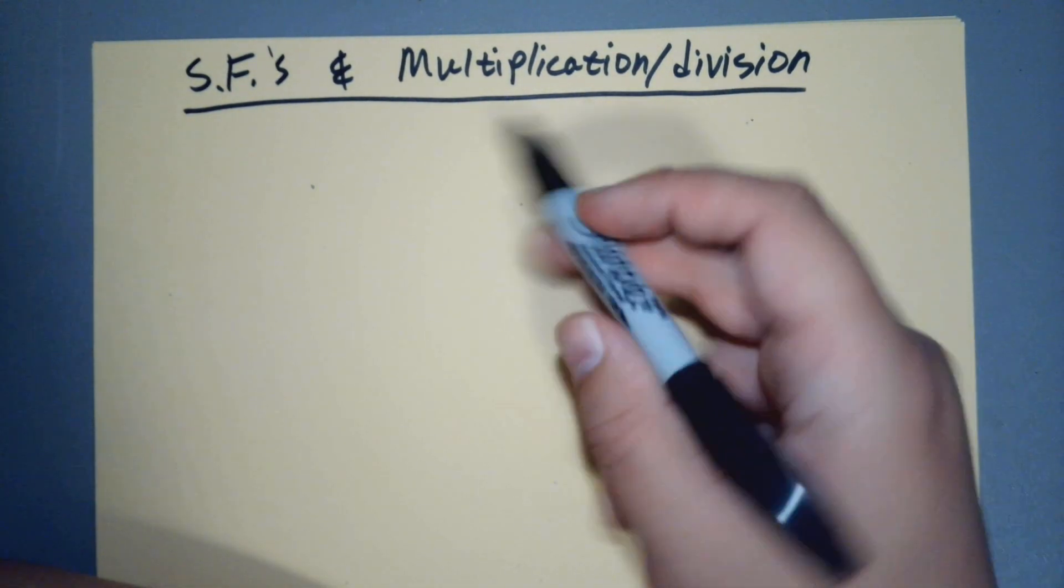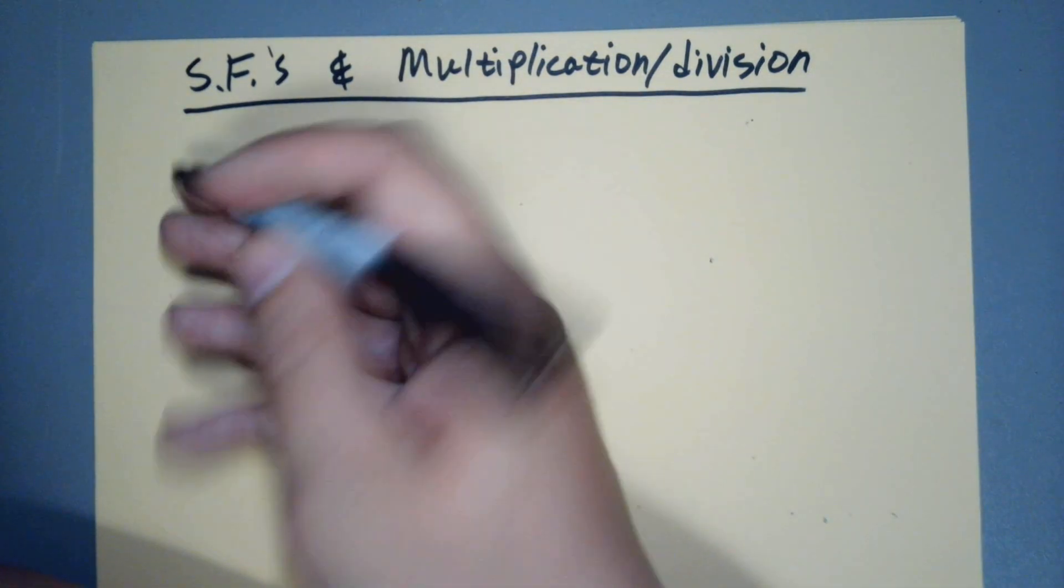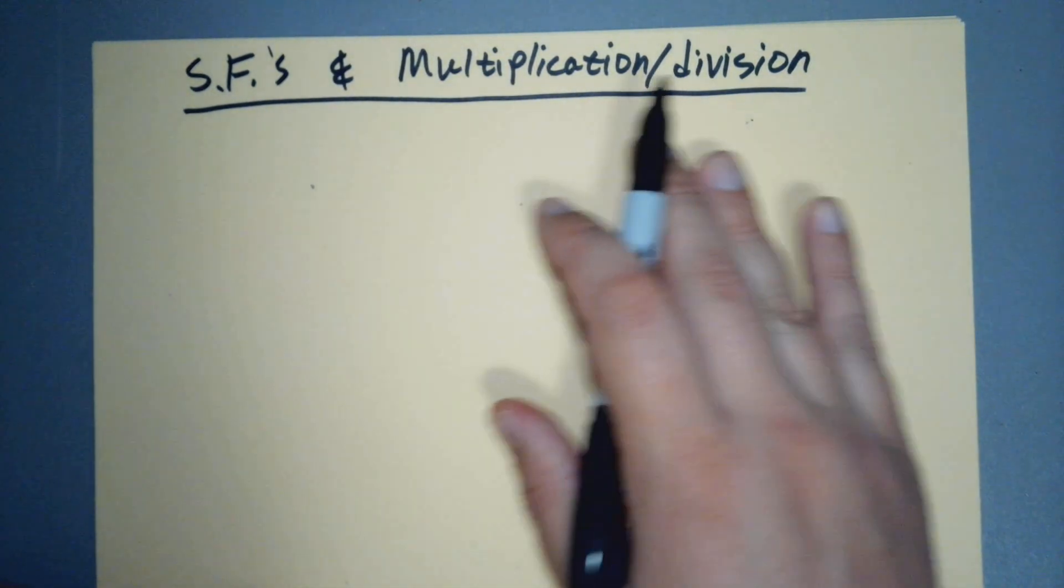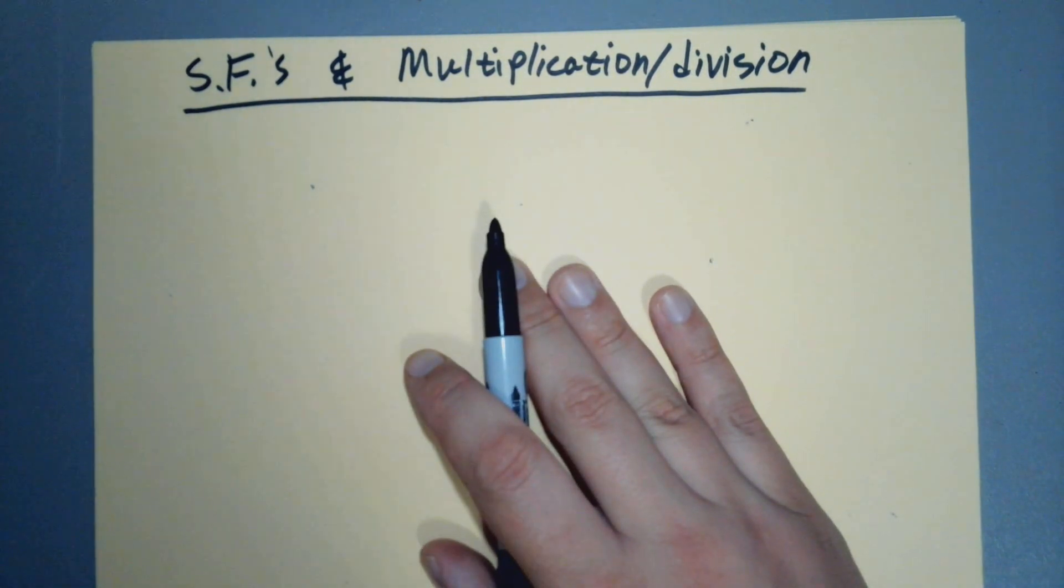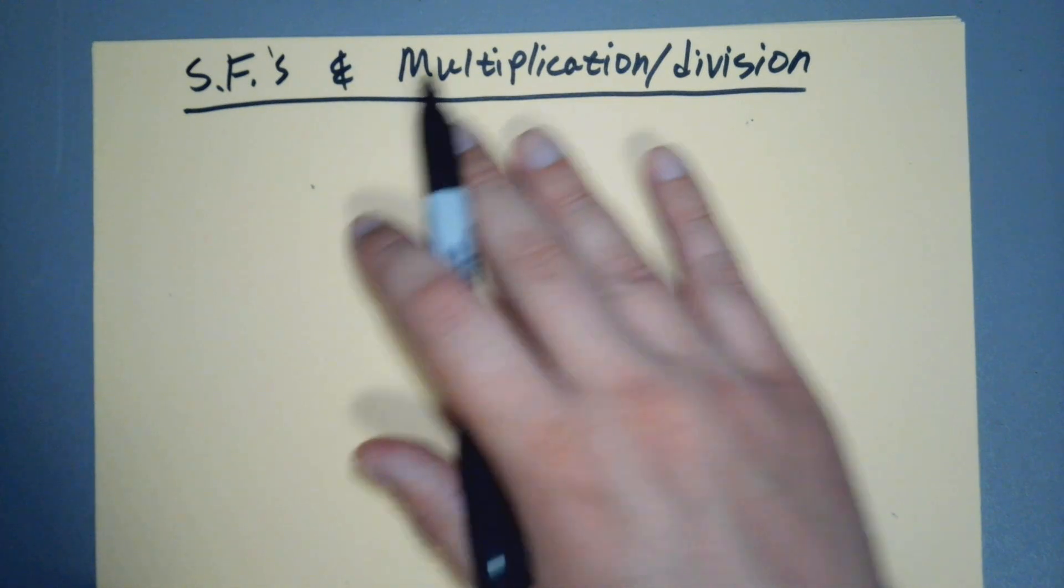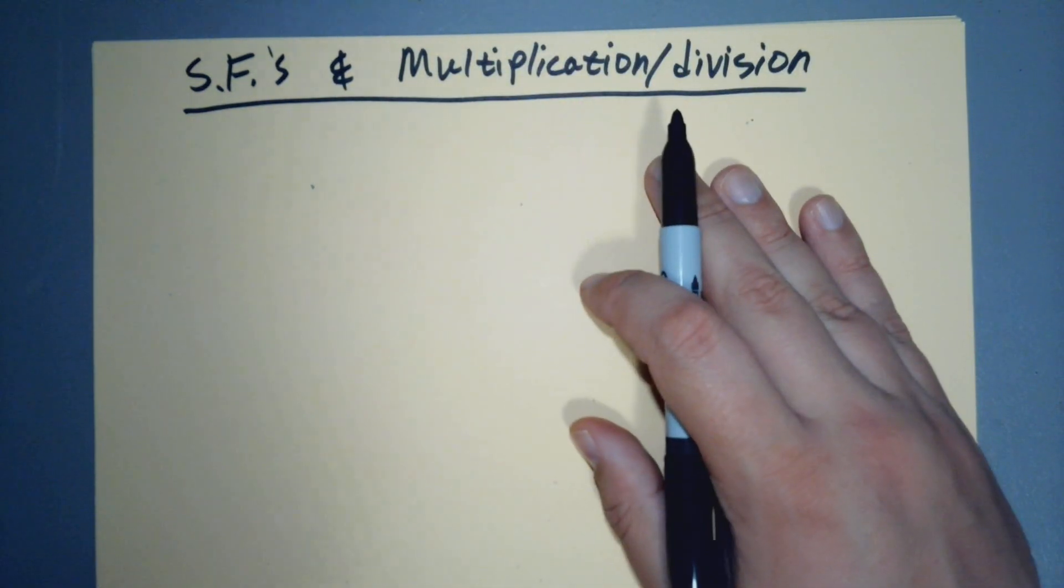And so multiplication and division, again, multiplication you can think of as forward, division is the reverse of that. So the rules, these are almost identical operations, so the rules are the same. Just like addition and subtraction have the same rules, multiplication and division are going to share a rule set with each other as well.